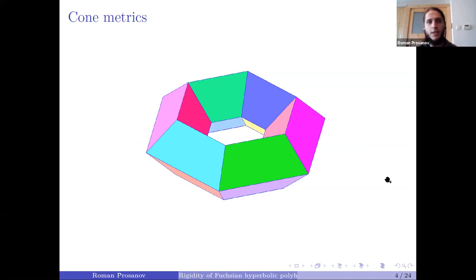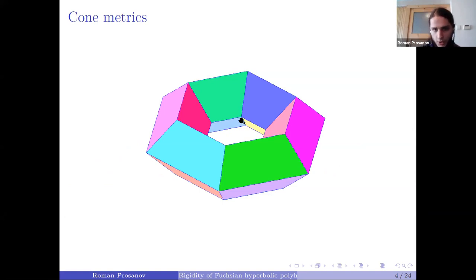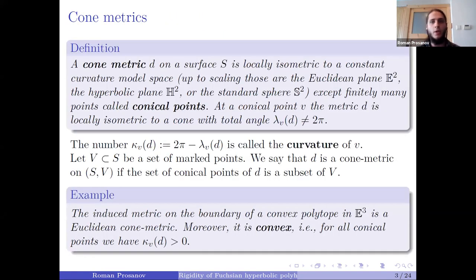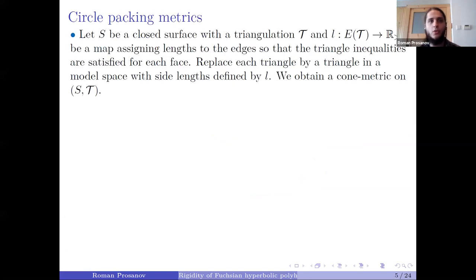Here is another example: a con metric embedded in three-dimensional Euclidean space as a polyhedral torus. Of course it is not convex — around those vertices the total angle is greater than 2π, so the curvature is negative. But normally we do not consider con metrics this way; we consider a different process.